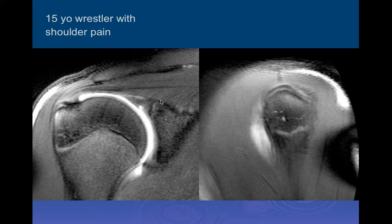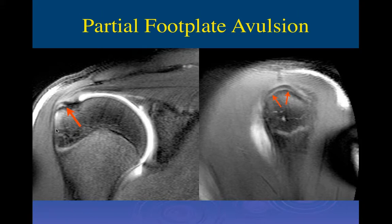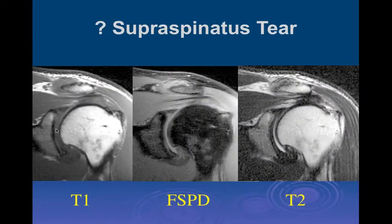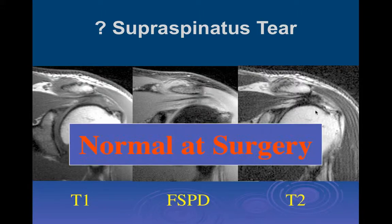Here's a 15-year-old wrestler with shoulder pain showing high signal intensity on the bursal side, some tendinosis within the distal tendon, and marrow edema within the bone itself—a partial footplate avulsion due to an acute injury. Another example on a T1-weighted PD fat-sat image shows ill-defined increased signal intensity within the supraspinatus tendon, and on the T2-weighted image the tendon is pulled back with probably a little scar in situ and a full-thickness tear of the supraspinatus. This was called normal at surgery because they only looked at the joint-side surface.